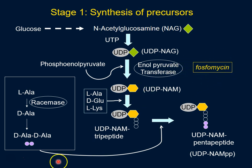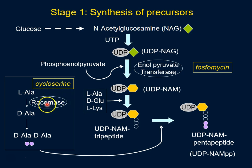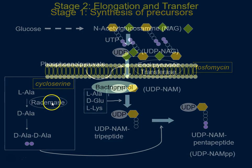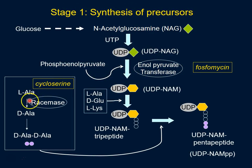The other antibiotic important for this stage is cycloserine, which is often used for the treatment of tuberculosis. As I mentioned, racemase is critical for converting L-alanine to D-alanine, and cycloserine is an inhibitor of racemase.